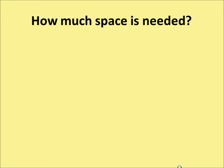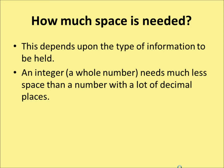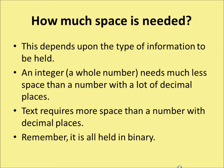But how much space do we need? Obviously, if we put two pieces of information over the top of each other, we're going to make a mess of our program, so the computer has to know exactly how much space to leave. This depends upon the type of information to be held. An integer — a whole number — needs much less space than a number with a lot of decimal places. Text requires more space than a number with decimal places, because we don't know how long the text is going to be, and it can change. And remember, it's all held in binary — so the number 12 isn't held as 12; it's held as its binary equivalent, which is much longer than two characters.